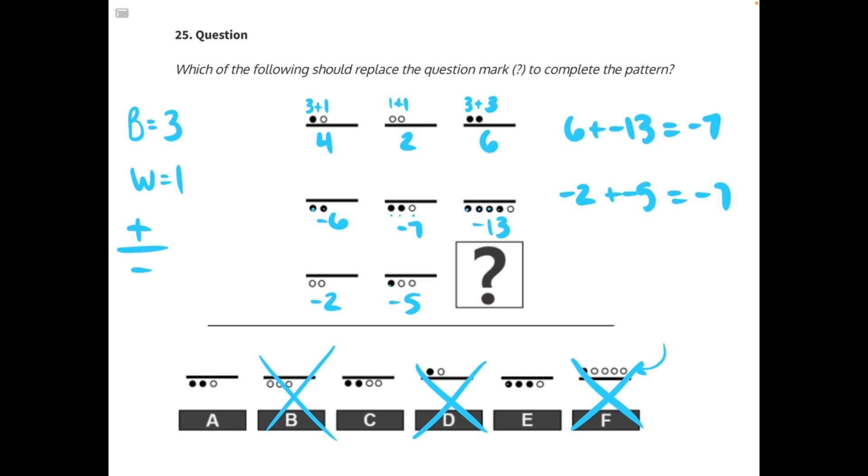E has three black circles, which we know would be negative 9, and that's already too big even before we add on that extra white circle. So between A and C, if we count all of these up, we have 3, 6, 7, 8. This is negative 8. And we have 3, 6, 7, negative 7. It has to be answer choice A.